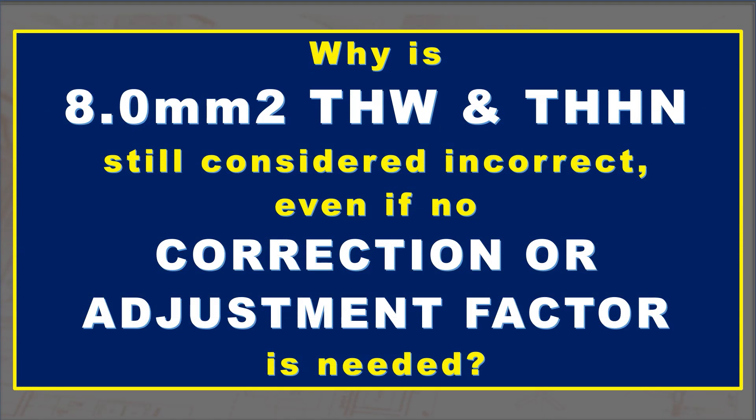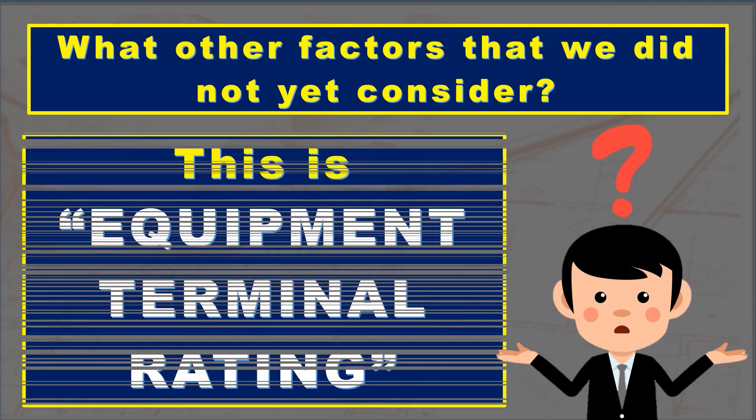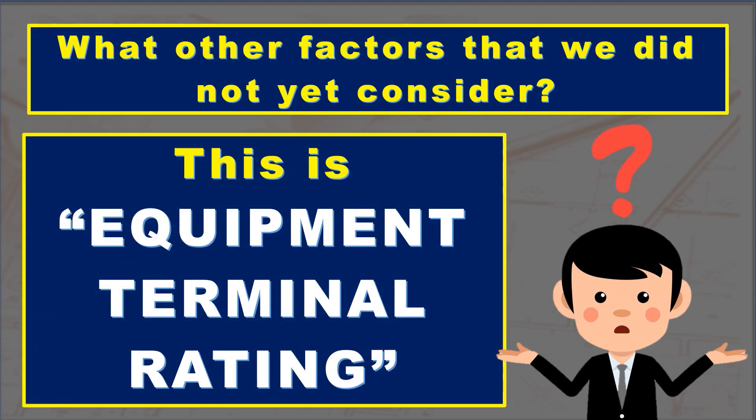Going back to the first question — why are 8 squared millimeters THW and THHN still considered incorrect even if no correction or adjustment factor is needed? Are there any factors still to consider? Yes — this is equipment terminal rating.